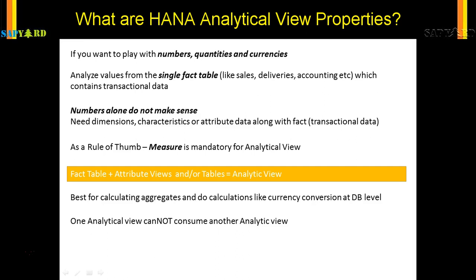So when we have the transaction data — that is the fact — along with the dimension or the master data, then the analytical view comes into picture. Just like in the attribute view, one of the output fields has to be defined as key — that was a rule of thumb. Similarly, in analytical view, a measure is mandatory. There has to be one fact table and then multiple attribute views or master data, which we join together to form the analytical view.